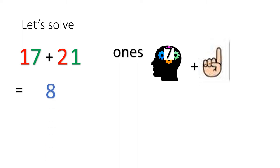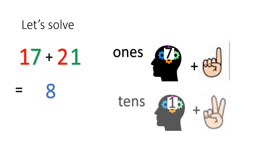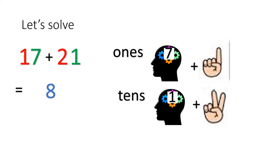Next we solve the place value 10. You have 1 — put it inside your brain and 2 on your fingers. So what's the number after 1? Let's count: 2, 3. So the answer is 3. That gives us 38.